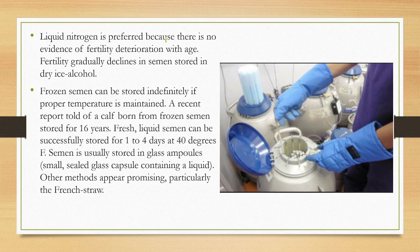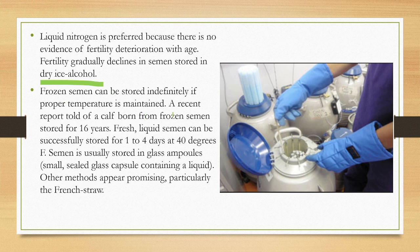Liquid nitrogen is preferred for storage because there is no evidence of fertility deterioration with age — fertility gradually declines in semen stored in dry ice-alcohol preservation method. Frozen semen can be stored indefinitely at proper temperatures. A recent report described a cow born from frozen semen stored for 16 years.